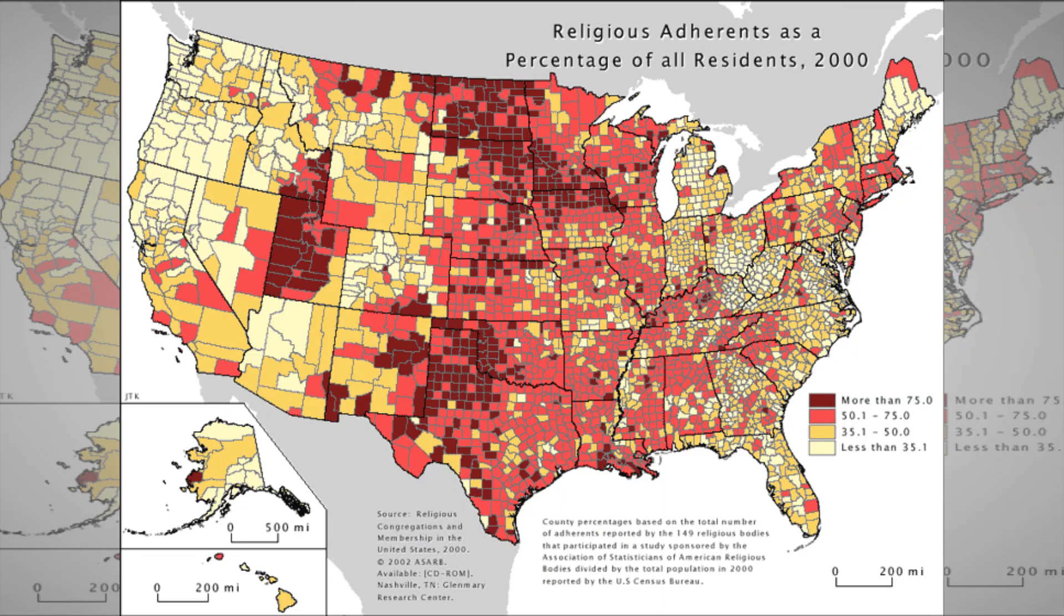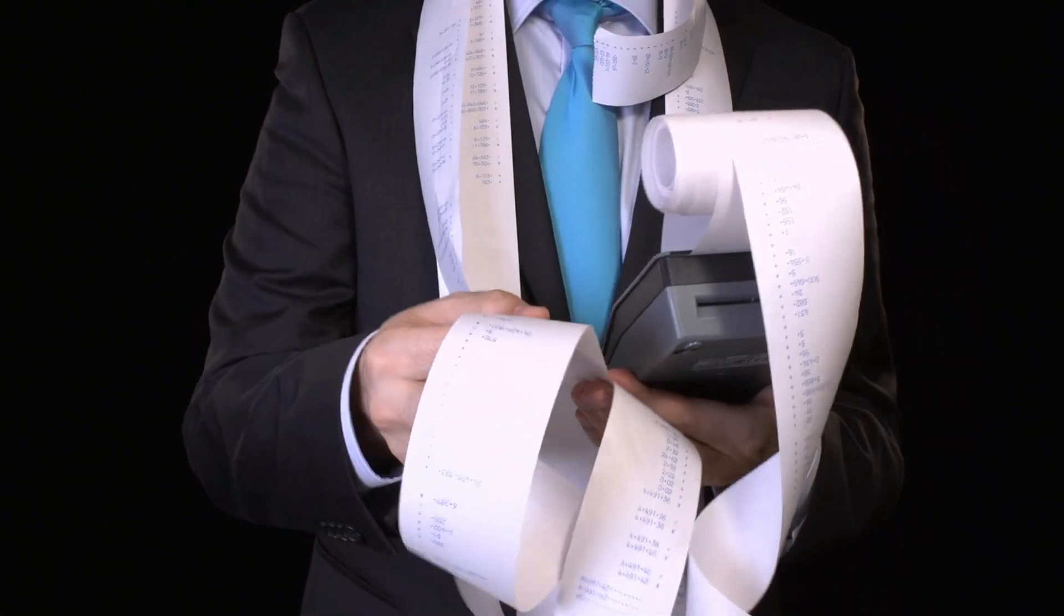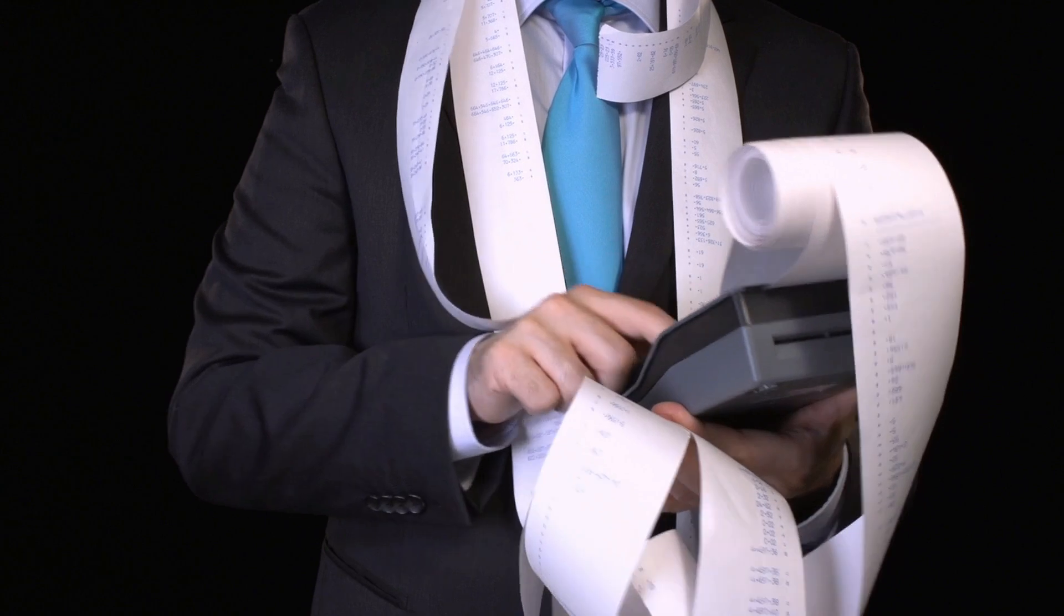For example, what's the religious breakdown of the United States or how many voters live in urban areas compared to rural areas. These answers are looking for specific numbers, facts. They're not looking for opinions or personal beliefs.